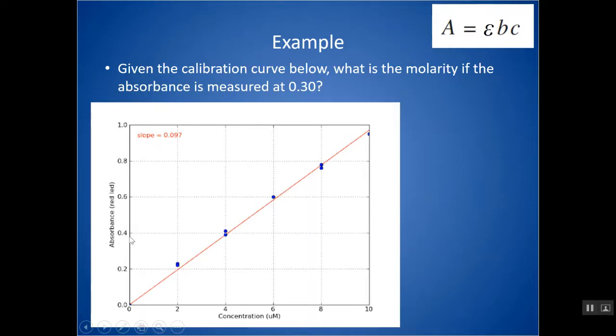If absorbance is measured to be 0.3, find 0.3 and drop down — you would get about 3. Notice here the units are micromolarity, so make sure you are being aware of units.